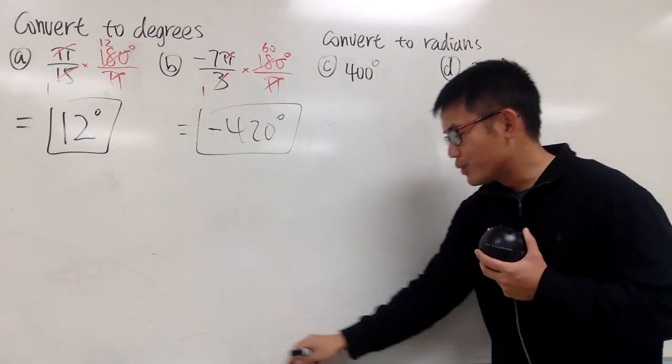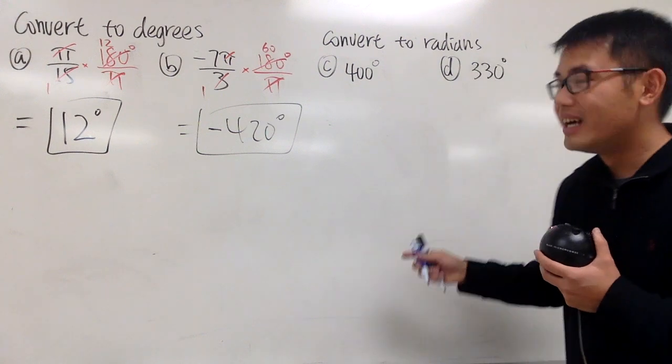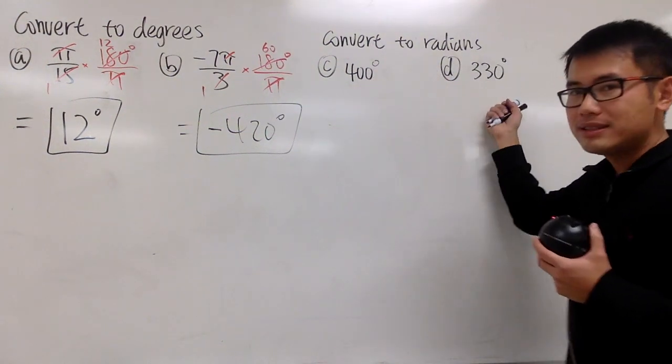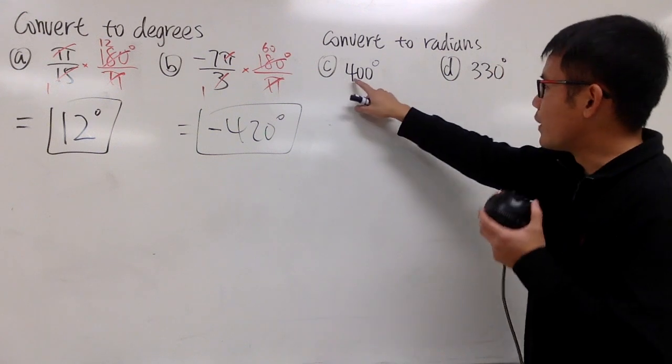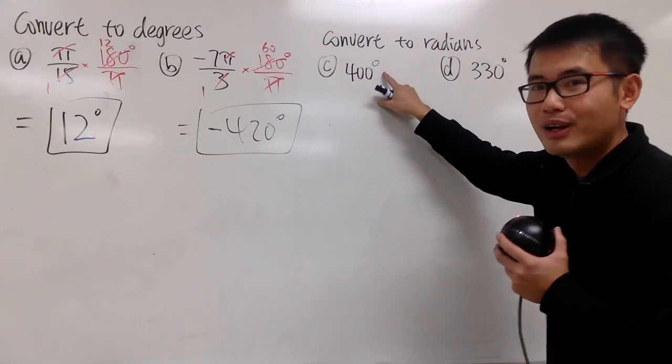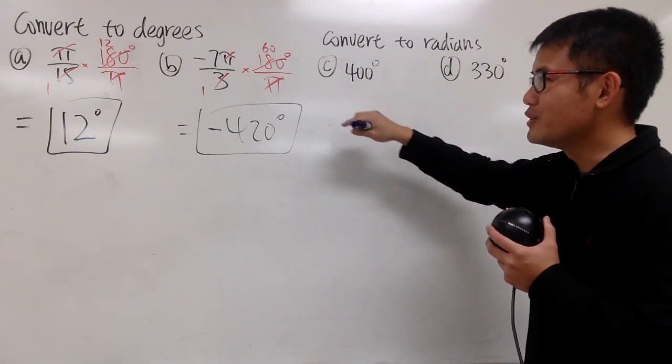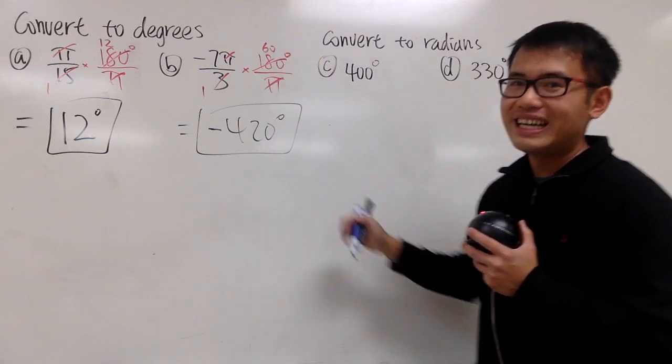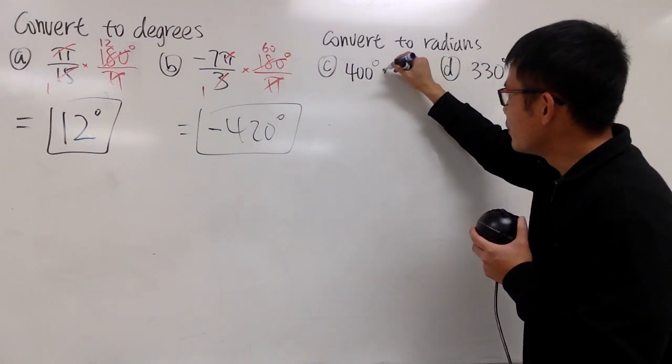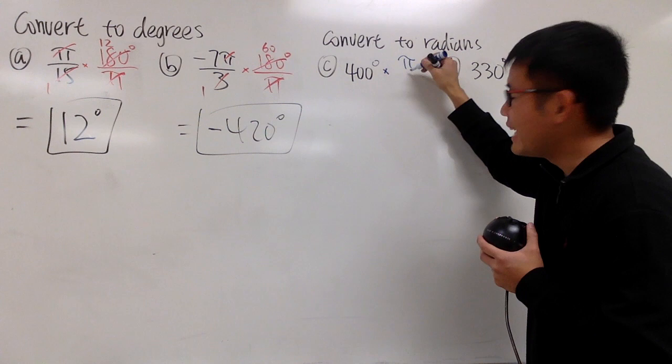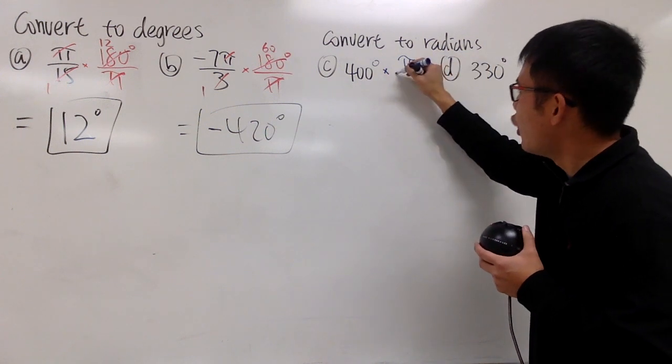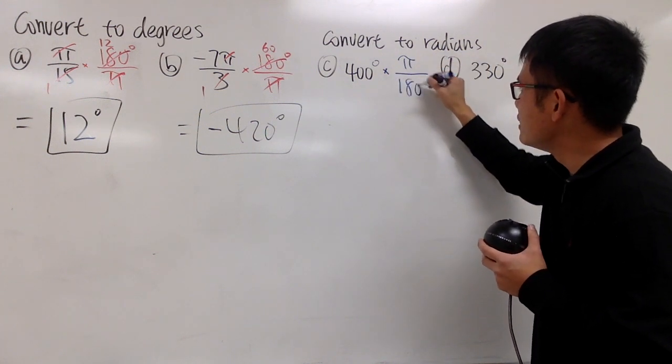Now, we will do it backwards. Convert these degrees to radians. First of all, we have 400 degrees. To get back to radians, we can just multiply by the reciprocal of this. So in another word, we multiply by π radians over 180 degrees.